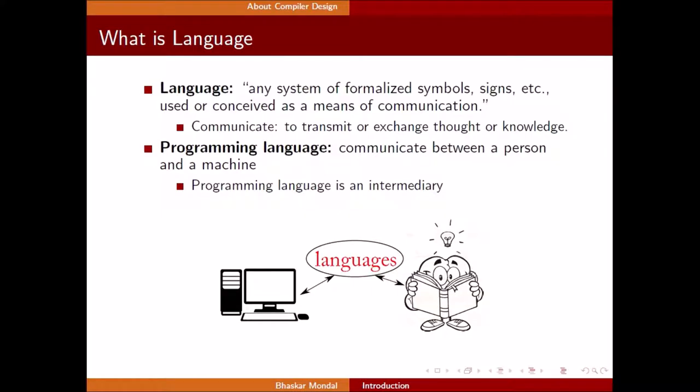Before we start with compiler design, we must know what is language. Any system of formalized symbols, signs, etc., used or conceived as a means of communication is known as language. To transmit or exchange thought or knowledge is known as communication. So what is programming language? Communication between a person and a machine. We need programming language to communicate with machines. Programming language is just an intermediary using which a programmer can give instructions to a machine.